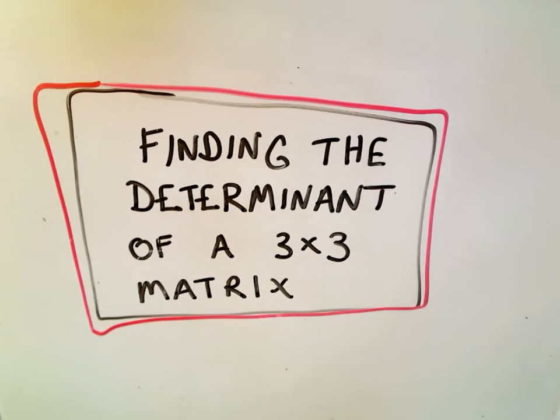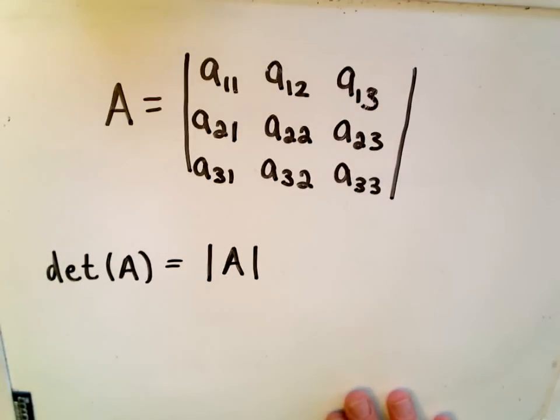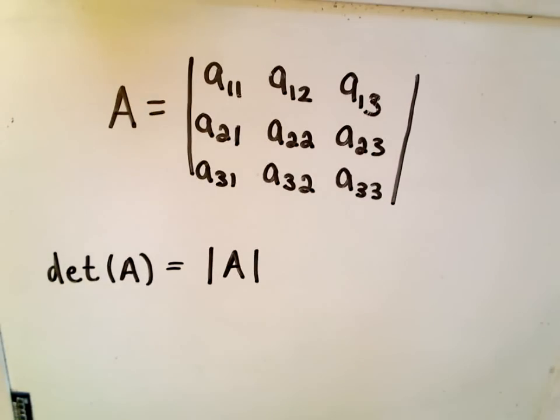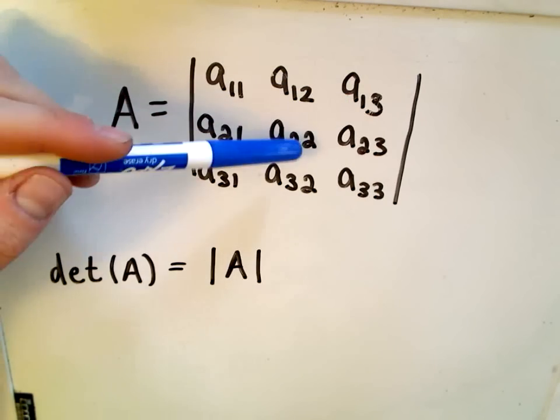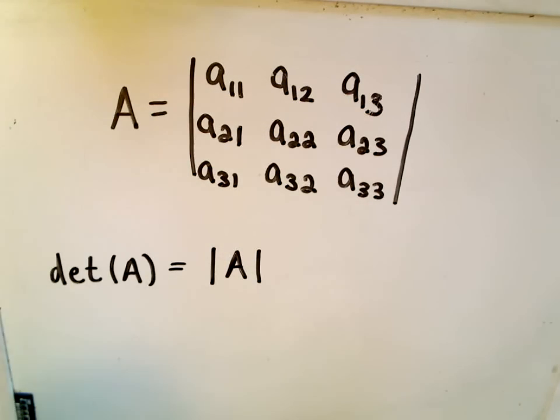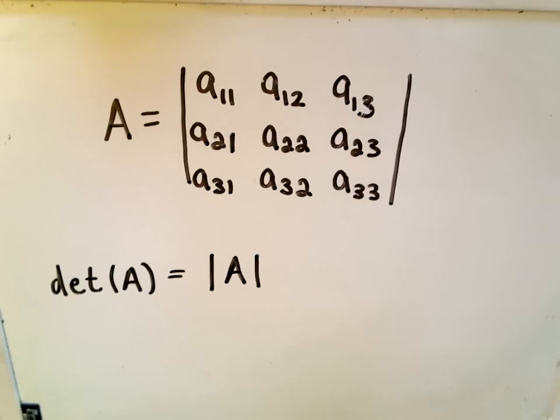Okay, in this video I want to talk about finding the determinant of a 3x3 matrix. Here's my matrix A, and the entries are A₁₁, A₁₂, A₁₃, A₂₁, A₂₂, A₂₃, A₃₁, A₃₂, A₃₃ - just a generic way of writing a matrix. The notation for the determinant of A is either det(A) or written with vertical bars that look like absolute value.